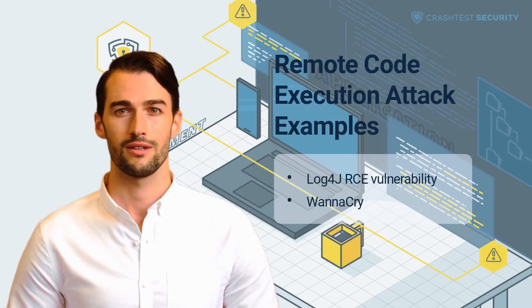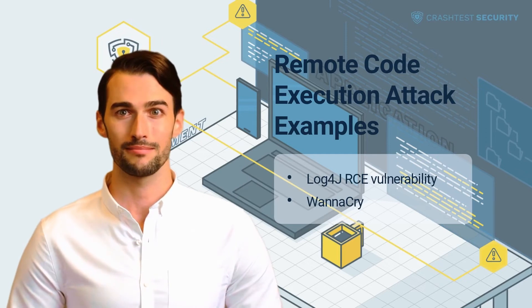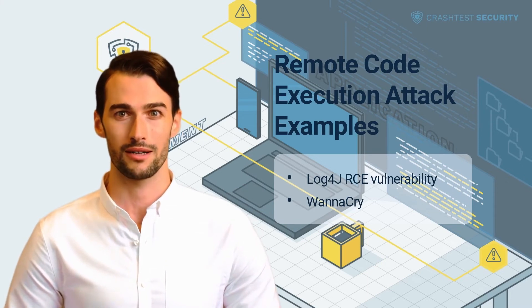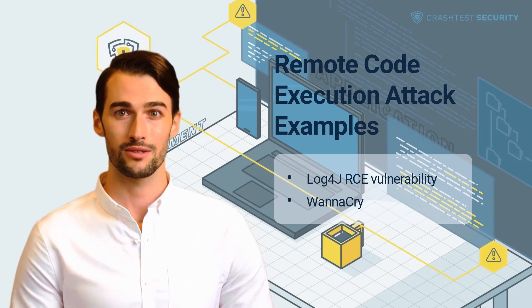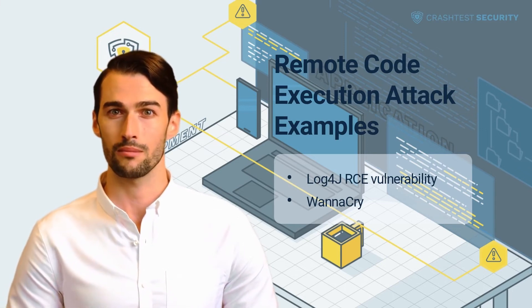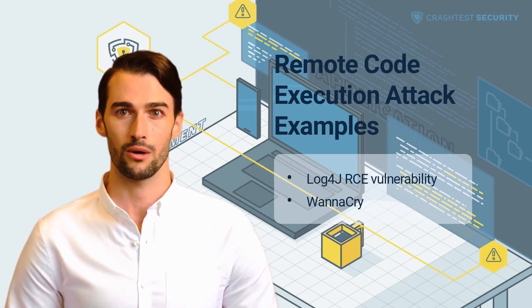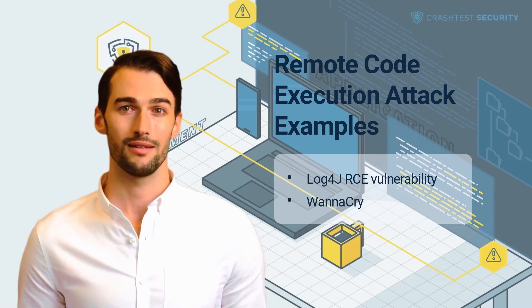Some of the most significant and most dangerous vulnerabilities, and the attacks they have enabled, have involved using RCE. Log4J RCE Vulnerability — Log4Shell CVE-2021-44228 is a remote code execution vulnerability in Log4J, a popular Java logging framework estimated to affect millions of devices worldwide. It has been called the single biggest, most critical vulnerability ever. While it existed since 2013, it became known in November 2021 and was publicly disclosed in December of that year. The vulnerability allows users to execute arbitrary Java code on servers, opening the door for crypto mining, creating botnets, and injecting ransomware.